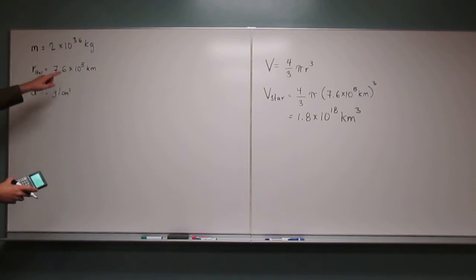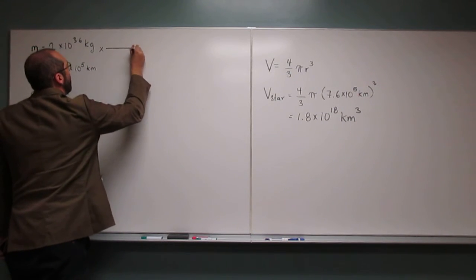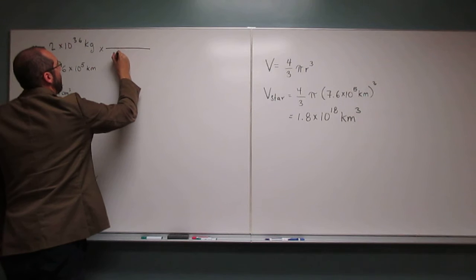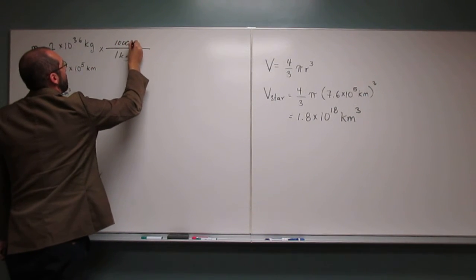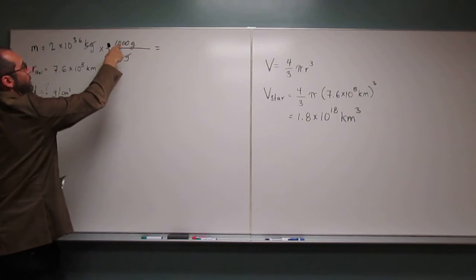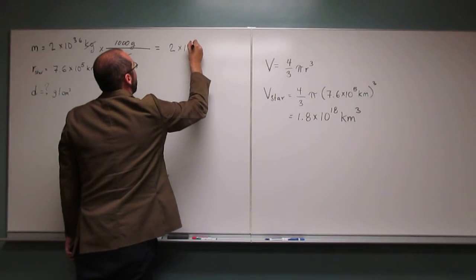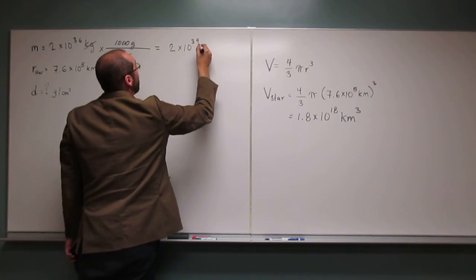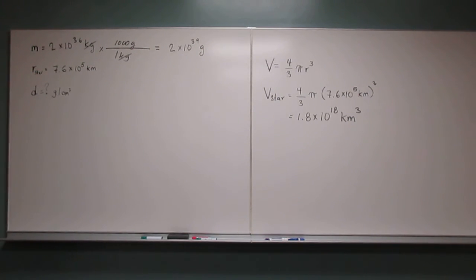Also, when we look over here, we've got kilograms for the mass of the star, but we want grams for the density. So let's remind ourselves how to change kilograms to grams. So 1 kilogram for every 1,000 grams. So kilograms cancel, and that's 1 to the 3rd plus 36. So it's going to be 2 times 10 to the 39 grams. That's the mass of the star. Pretty massive.